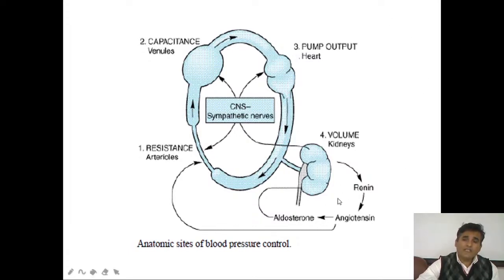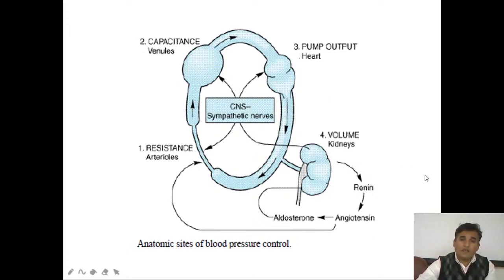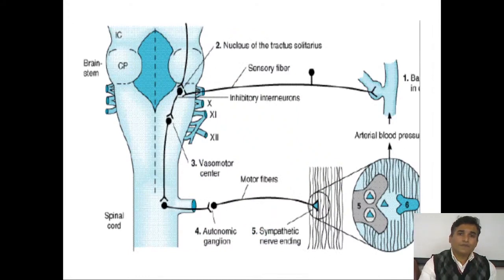Apart from increasing blood pressure, the continuously elevated level of angiotensin-2, having proto-oncogenic activity, may proliferate myocytes. After chronic hypertension, the patient may suffer from myocardial hypertrophy.